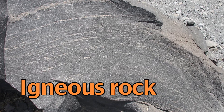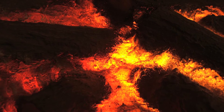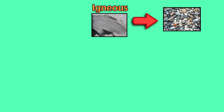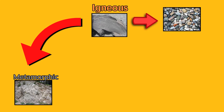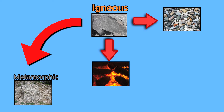We'll start with igneous rock. Igneous rock is formed by the cooling of magma. Once the rock has been formed, there are multiple processes the rock can undergo depending on its environment. The rock can be weathered down to form sediments, the rock can undergo effects of heat and pressure, or the rock can be melted down again and become magma.